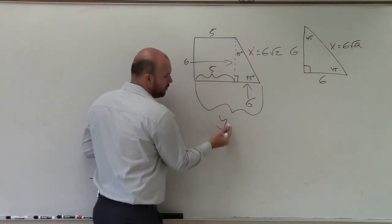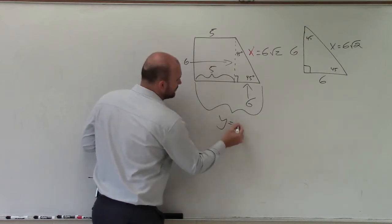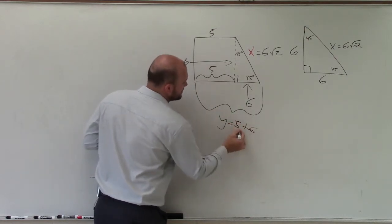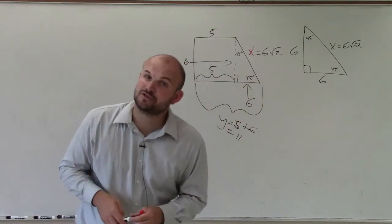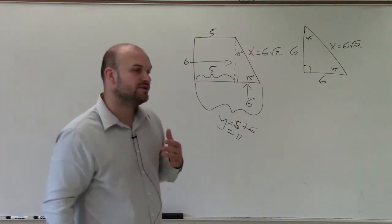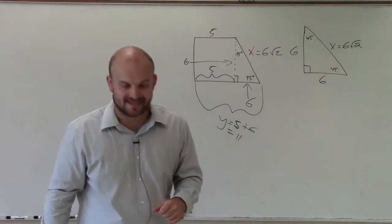y is the total distance, right? Well, that's going to equal 5 plus 6, which is equal to 11. So there you go, ladies and gentlemen. That is how you use your special right triangle relationships to determine your missing lengths. Thanks.